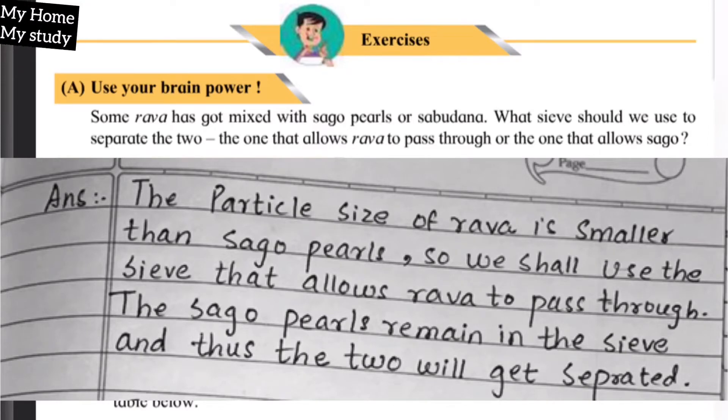See the exercise. First one: Use your brain power. Some rava has got mixed with sago pearls or sabudana. What sieve should we use to separate the two - the one that allows rava to pass through or the one that allows sago? Students, the question asks if rava particles, which are small, get mixed with sago seeds or sabudana, how will we separate them? Which strainer should we use? Answer: The particle size of rava is smaller than sago pearls, so we shall use the sieve that allows rava to pass through. The sago pearls remain in the sieve and thus the two will get separated.